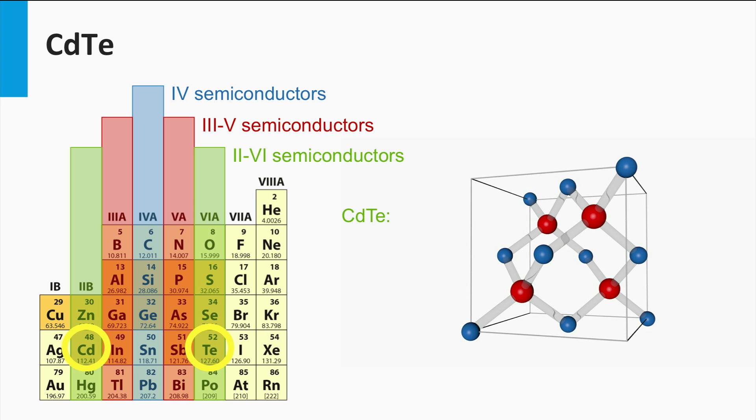It means that the diffusion length for the charge carriers has to be in the same order to have the light excited charge carriers collected at the contact.